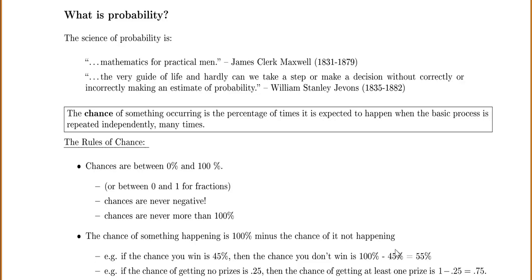So how do we find a chance? How do we find a probability? The chance of something happening is the percentage of times that it is expected to happen when a basic process is repeated independently many times. If we do the same thing many many times, what percentage of times should a certain thing happen?